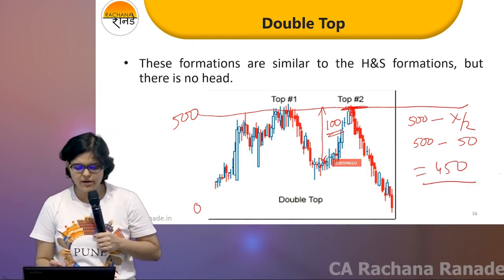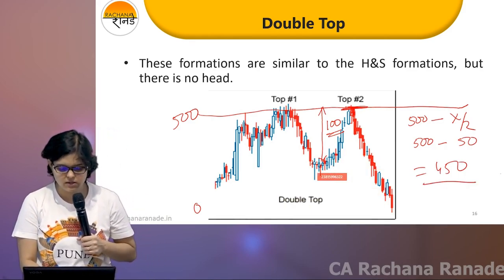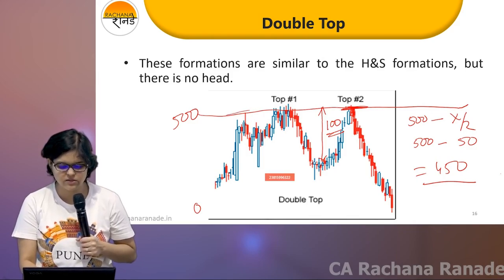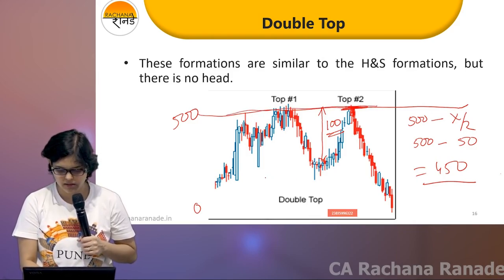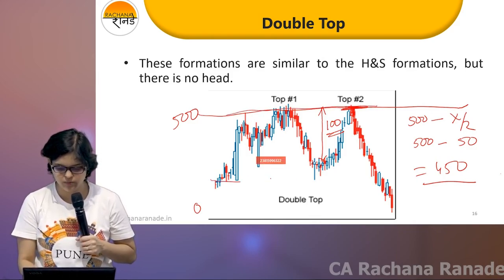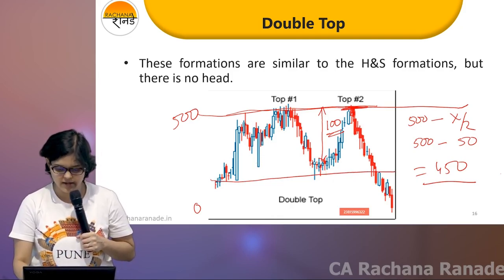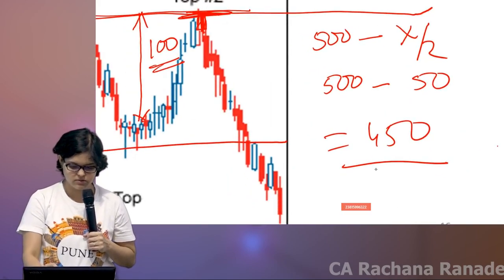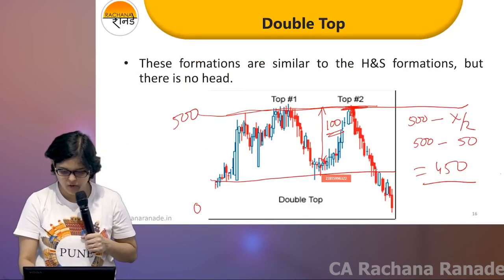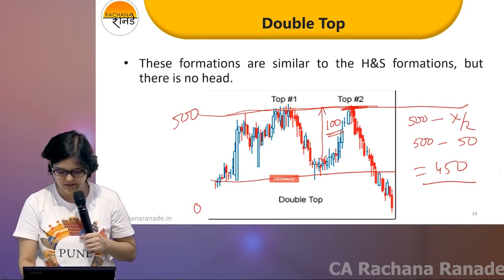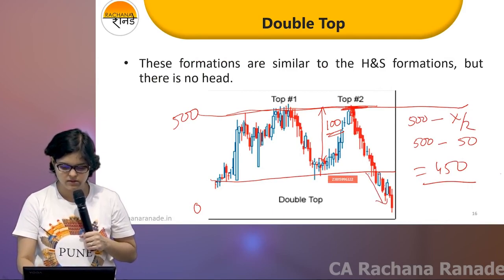What has happened? The resistance was honored — can I say support was also broken simultaneously? And with a big red candle, but then followed again by green and red and green. But even this can be like x by 2.